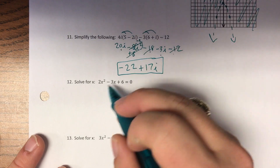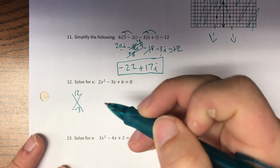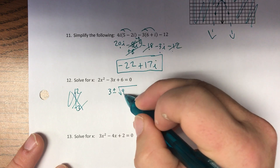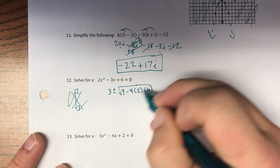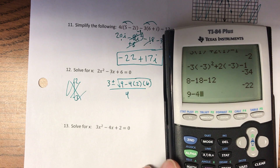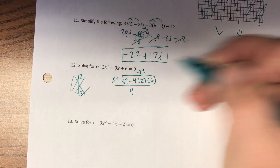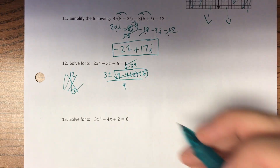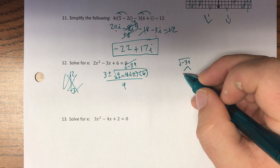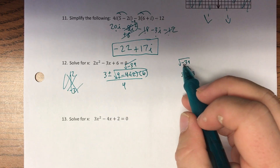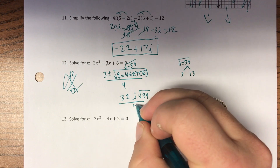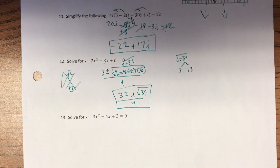Solving for x — what multiplies to 12 and adds to negative 3? I can't think of anything, so we do the quadratic formula: (3 ± √(9 − 4·2·6)) / 4 = (3 ± √(−39)) / 4. The discriminant is negative, so this is imaginary. Pulling out the i, the final answer is (3 ± i√39) / 4 — those are my two imaginary solutions.